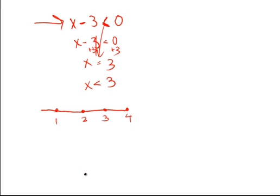Well, x cannot equal 3, meaning if we plug 3 in here we'd have 3 minus 3 which is zero. Zero is not less than zero. So to depict this on a number line, we want to have an open circle meaning x cannot equal 3.